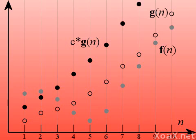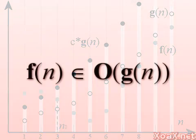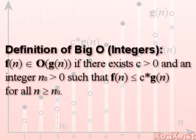Here we have a constant multiple of g(n) such that its graph is above the graph of f(n) from some point onward. The last value that puts the graph below the graph of f(n) is 2, so we can set n₀ to 3, and we have f(n) in the white area below the graph of c times g(n) from 3 onward. This is how we define Big O of g(n). Formally, we say that f(n) is in Big O of g(n) if there exists a positive real number c and a positive integer n₀ such that f(n) is less than or equal to c times g(n) for all integers n greater than or equal to n₀.